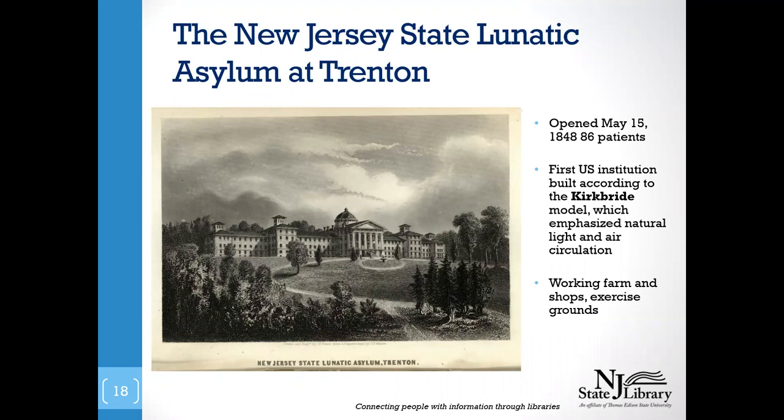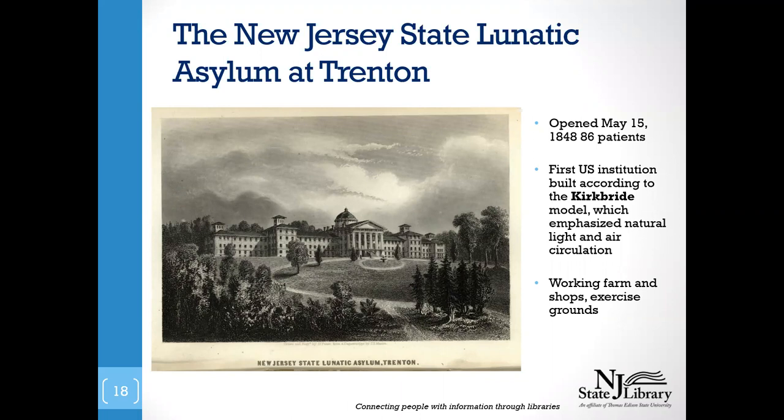The asylum opened in 1848 and, much like Utica, it followed what was called the Kirkbride model of architecture. The Kirkbride model considered the design of the space to be a part of the restorative process for patients. It emphasized natural light, fresh air, large ornamental grounds where patients could walk — aesthetically pleasing and mentally stimulating. It advocated for colors, fabrics, and art on the walls. It was designed with total care in mind as a place for a patient to both physically and mentally rest and recover.